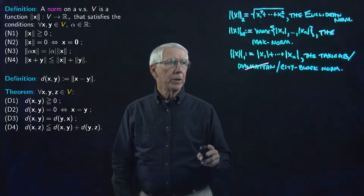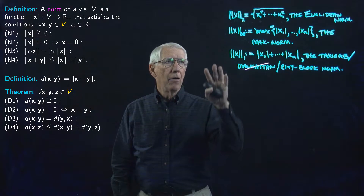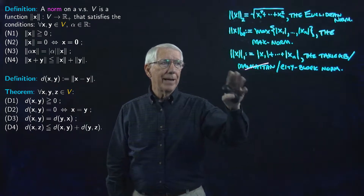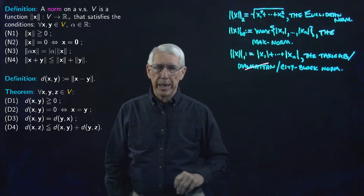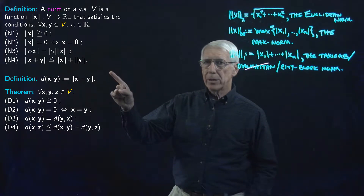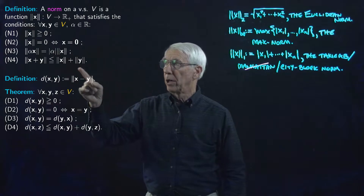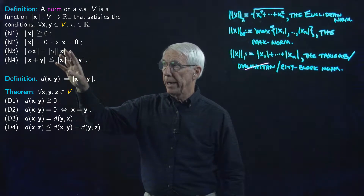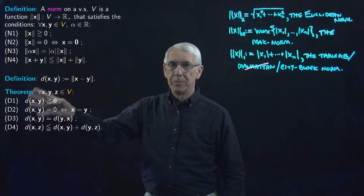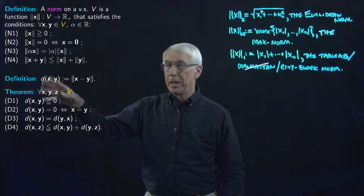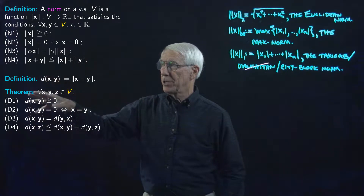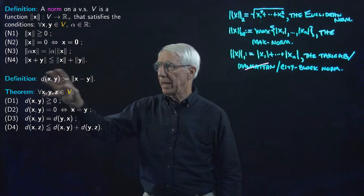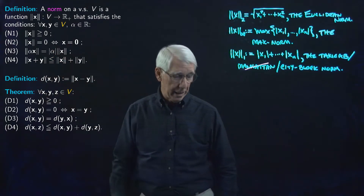We're going to give a couple of examples of alternative norms on vector spaces other than Rn. I've brought back our definition of a norm on a general vector space, which needn't necessarily be Rn. The theorem I'm going to emphasize is the first instance of a result that applies to any norm, because we got the result from just N1 to N4.